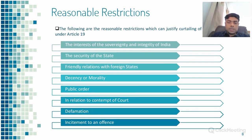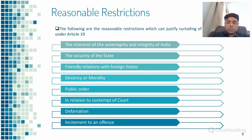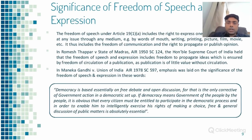What are the reasonable restrictions? There could be restrictions placed on Article 19(1) considering interest in sovereignty and integrity of India, security of the state, friendly relations with foreign states, decency or morality, public order, contempt of court, defamation and incitement to an offense. So whatever rights we see are not absolute — these rights come with certain levels of responsibility.